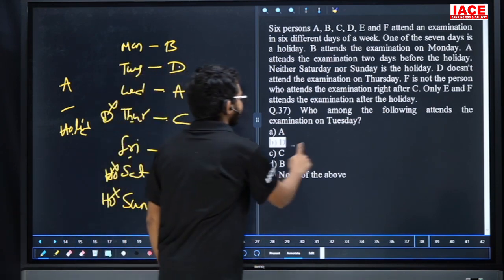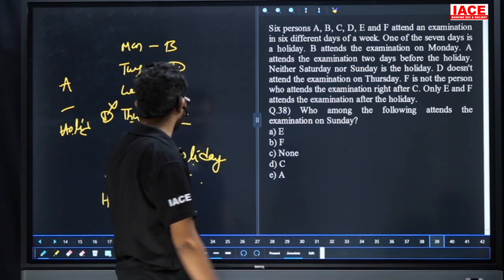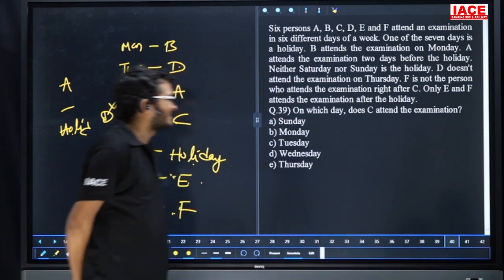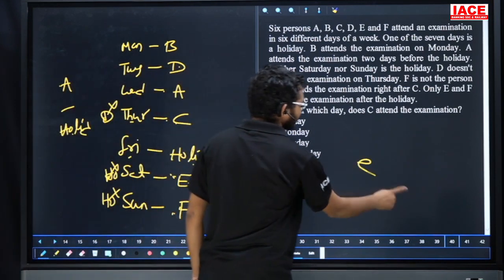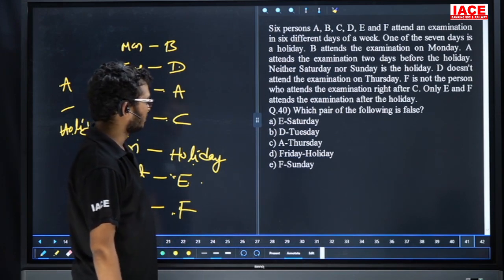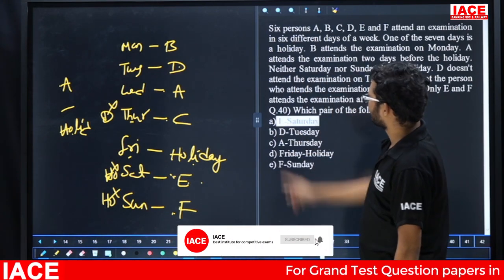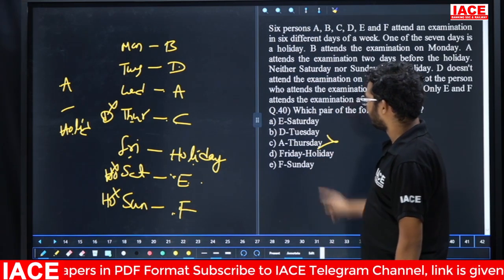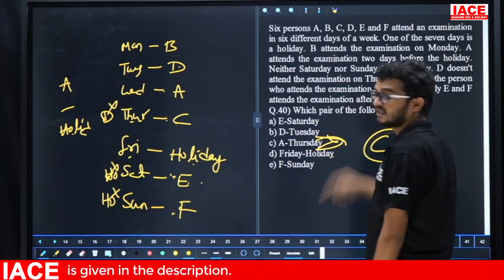Question 38: who attends on Sunday? F, option B. Question 39: on which day does C attend? Thursday, option E. Question 40: which pair is false? Checking pairs — D on Tuesday is correct; F on Sunday is correct; the false pair given is option C — that option is wrong based on our arrangement. Answer is option C.